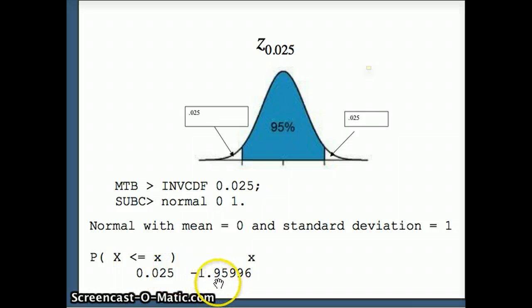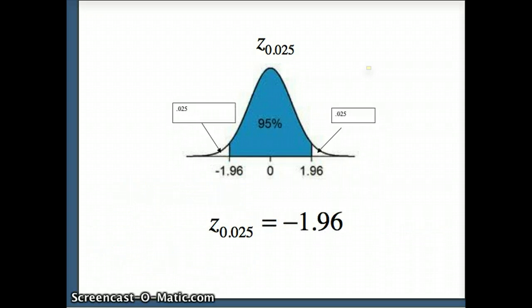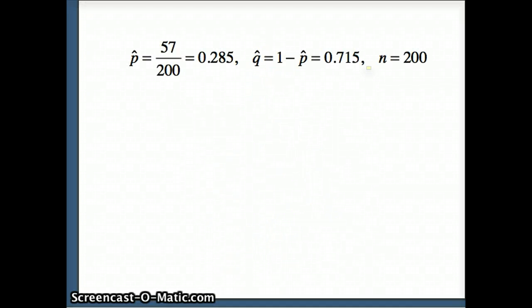And once that's the case we can then conclude that z sub 0.025 is negative 1.96. So there's our data, there's our z of 0.025, and here's our formula.